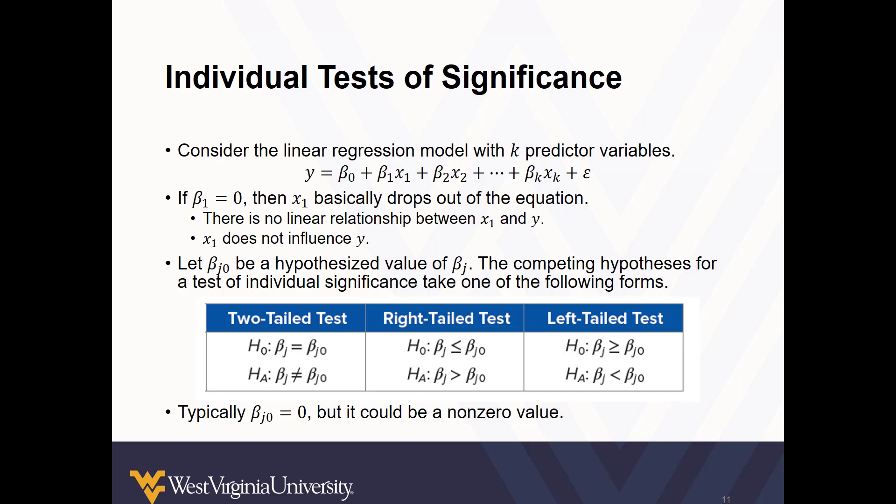So let's first look at this generally. If a beta for x is not statistically different from 0, then it basically drops out of the equation. The x variable it represents does not influence y or the dependent variable. In general, when we want to test whether the population coefficient beta sub j is different from, greater than, or less than beta sub j naught, where beta sub j naught is the hypothesized value of beta j, the different hypotheses take one of these values. Usually we're comparing the value to 0, but know that we can compare it to different values under certain circumstances.